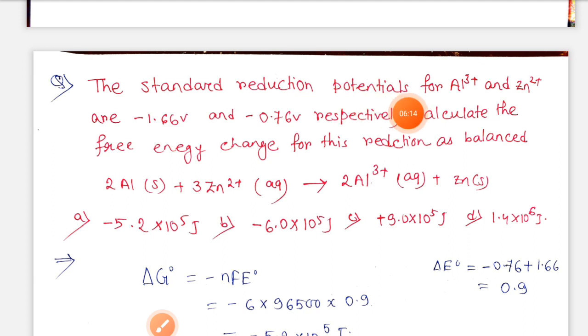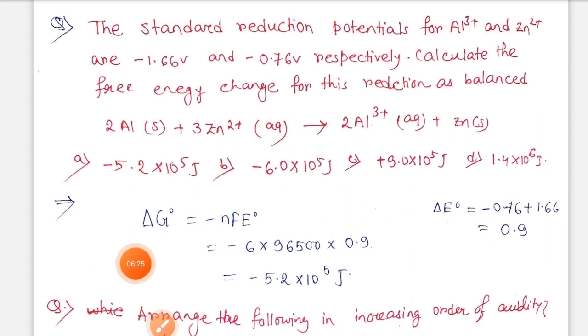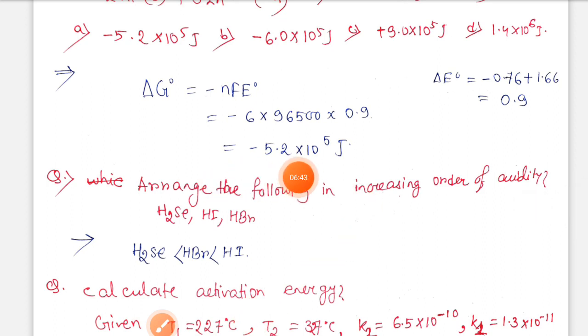The standard reduction potential for Al3+ and Zn2+ are minus 1.66 volt and minus 0.76 respectively. Calculate the free energy change. We know delta G equals minus nFE0. Here six electrons change occurs, and delta E0 is cathode minus anode, so 0.9. If we put these values, the answer is minus 5.2 times 10 to the power 5 joules.